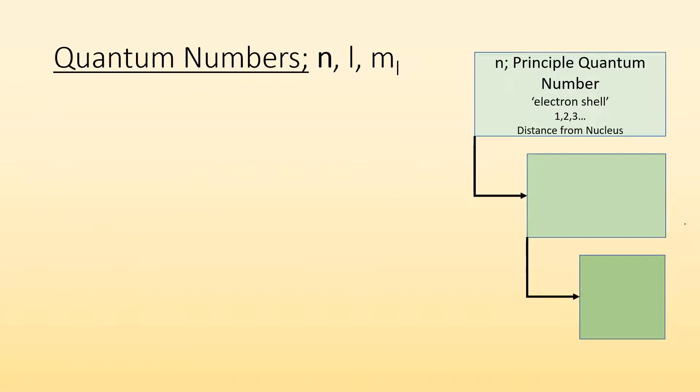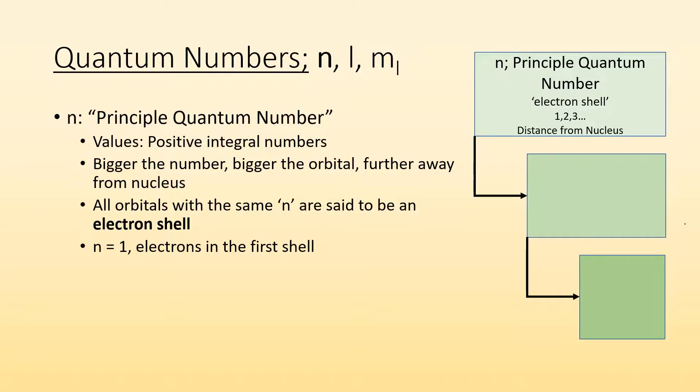So let's talk about the quantum numbers. We're going to talk about three, n, L, and ML. Let's start with n. So n is the principal quantum number. The values for n are some positive integral number. So it's got to be this positive whole number. The bigger the number is, the bigger the orbital is, and the further away from the nucleus it is. So when we're talking about where you find an electron, the lower the principal quantum number, the closer to the nucleus you are. Now, all orbitals within the same n are said to be an electron shell. So there might be multiple orbitals in that one electron shell. They're all part of the same electron shell. So where n equals one? Electrons are in the first shell.